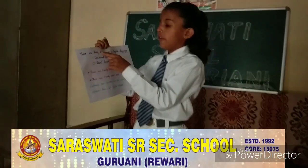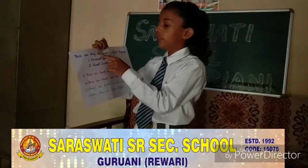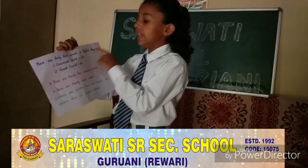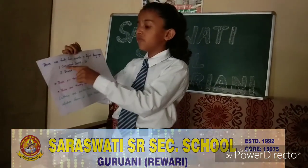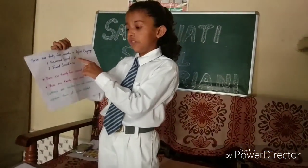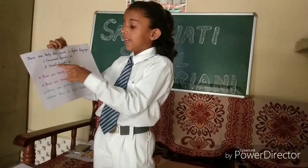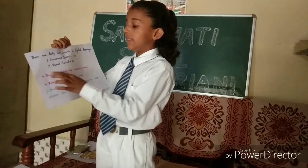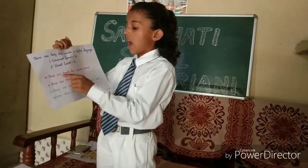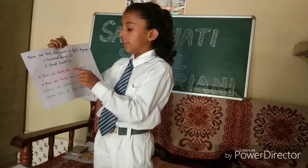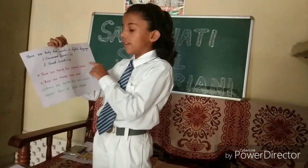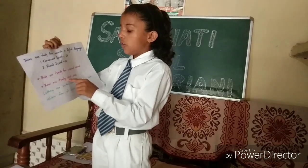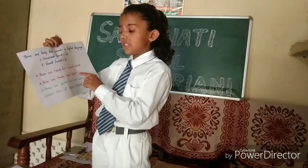There are 44 sounds in English language. First, consonant sounds: 24. Second, vowel sounds: 20. There are 24 consonant sounds. There are 24 vowel sounds.